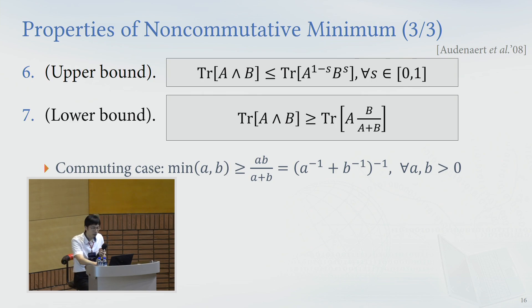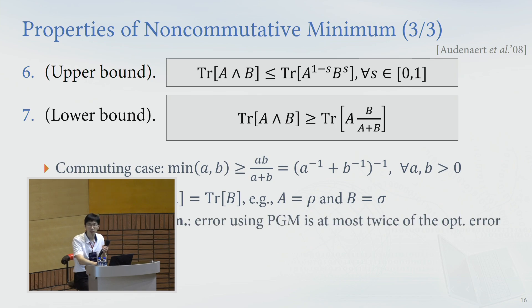In the non-commutative scenario, if operator A and B have the same trace, for example, A is rho, B is sigma, then we just use Barnum and Knill's theorem. And it's equivalent to Barnum and Knill's theorem because when we calculate the error probability under a pretty good measurement, then just by definition, something like this.